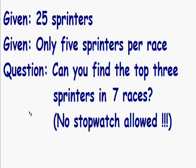There's no stopwatch allowed, so you don't know the exact time of any of the sprinters. The only thing we know is who gets 1st, 2nd, 3rd, 4th, and 5th. So the question is: can you find the top 3 sprinters in just 7 races? You can also assume that each sprinter runs exactly the same speed from one race to another — so if he runs one speed in one race, you can assume that if you use him in another race, he'll run the exact same speed.